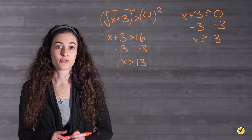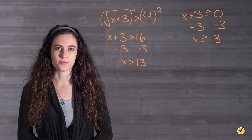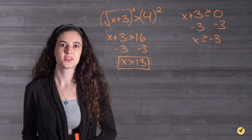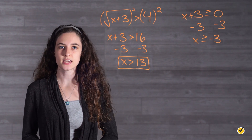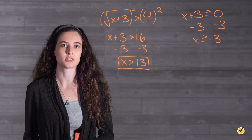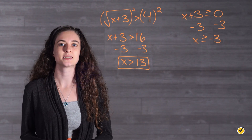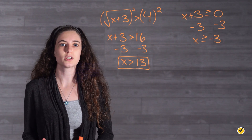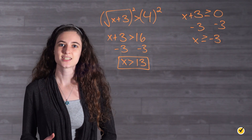Since our signs are in the same direction for both inequalities, we choose the more restrictive one as our final answer. x is greater than 13 is more restrictive than x is greater than or equal to negative 3. Because according to the second inequality, 0 could be included since it is greater than or equal to negative 3, but it is not truly in our solution set because it is not greater than 13. Therefore, we only want to consider values of x that are greater than 13.